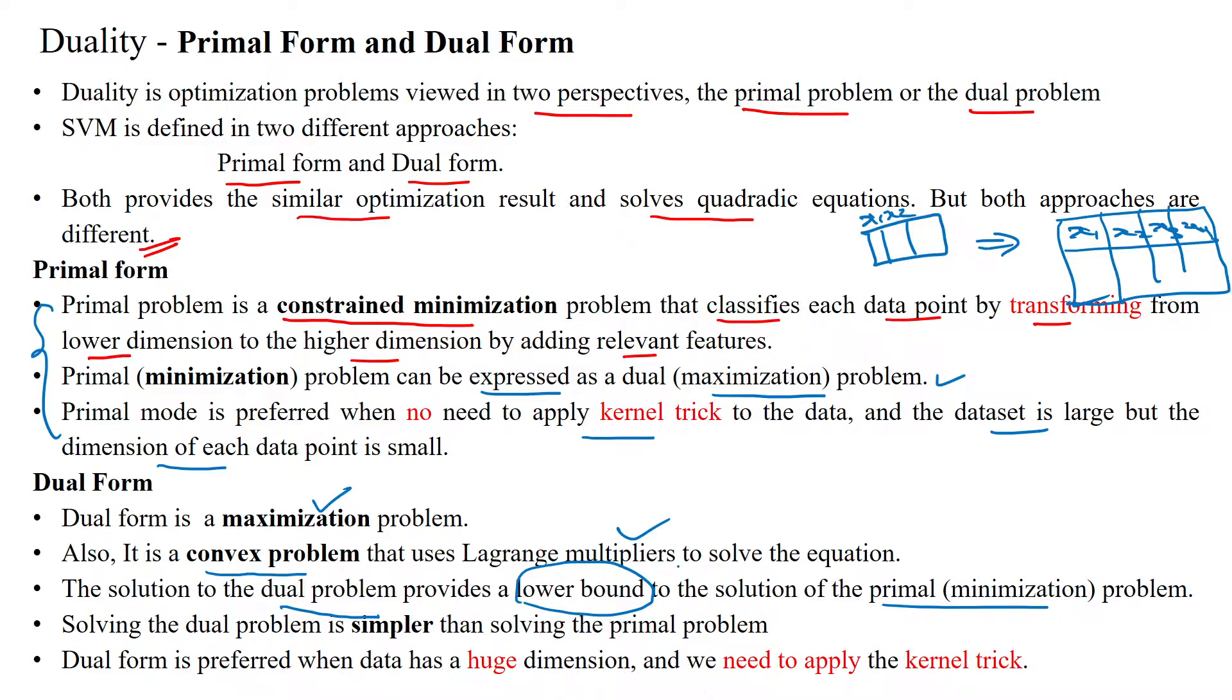The dual problem provides a lower bound to the primal problem. Since it's a maximization problem, solving the dual problem is easier than solving the primal problem.